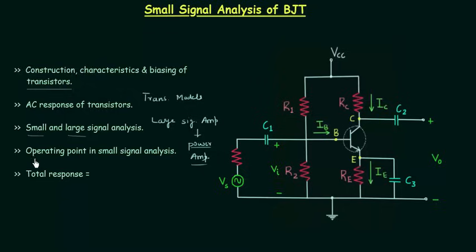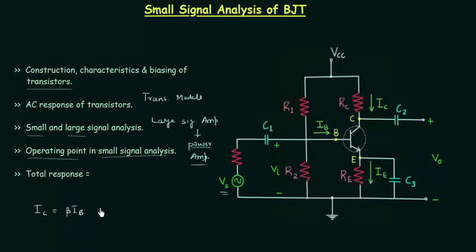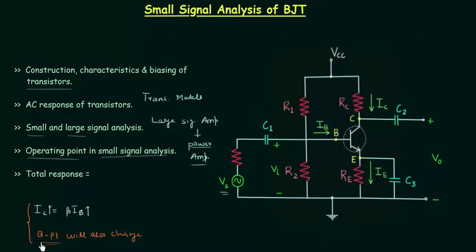Now we will talk about the operating point in small signal analysis. If we use the large signal, the base current IB will also increase. We already know the collector current IC is equal to beta times the base current (neglecting beta plus 1 times ICBO). If IB increases, IC will also increase, and when collector current changes, the Q point will also change, which is not desired.